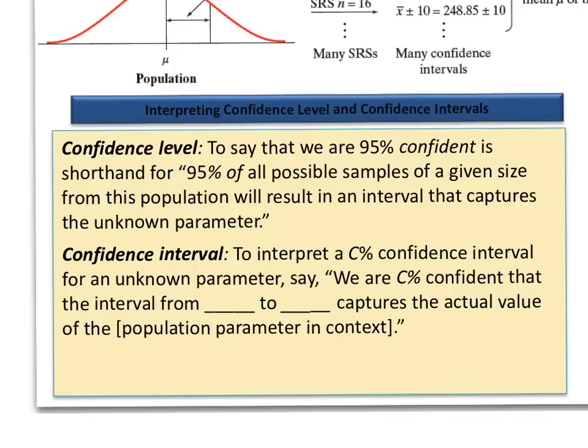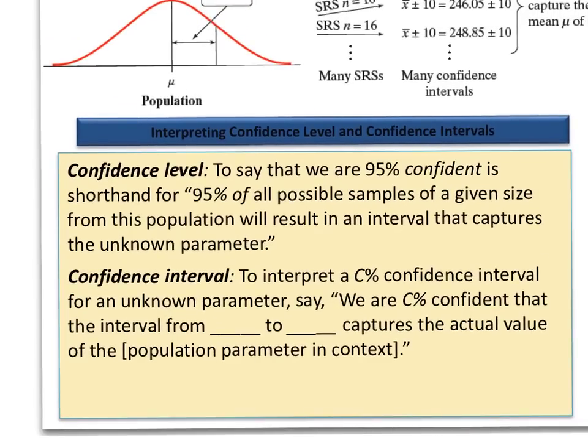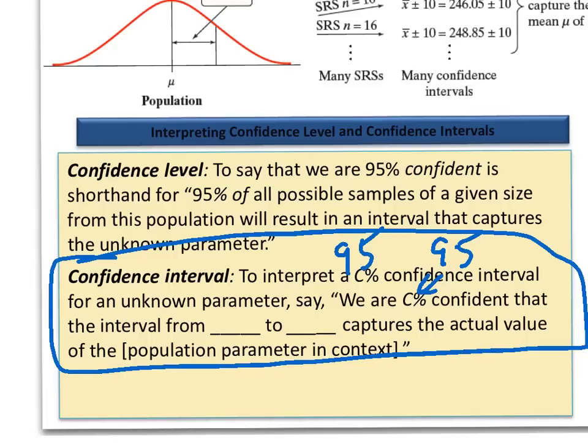To interpret any kind of a confidence interval, whether it be 95% or 80% or whatever percentage that you're looking at, for a 95% confidence level, we would say that we are 95% confident that the interval from our lower bound to our upper bound captures the actual value of whatever it is we're looking for, mean or proportion, which are the two things that we're going to look at most often. This is how you write a confidence interval whenever I ask you to interpret a confidence interval on the AP exam.